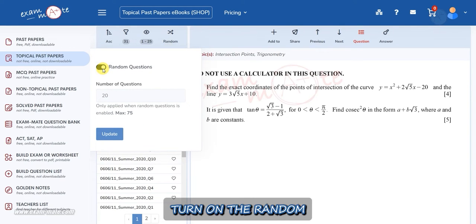In the open window, turn on the random questions key. Enter the desired number of questions in the number of questions field. Please note that the maximum number you can enter in this field is 75. Click the update button.